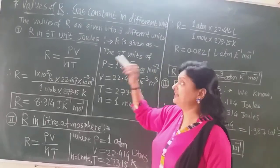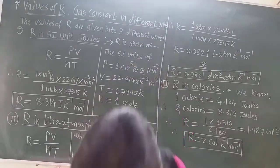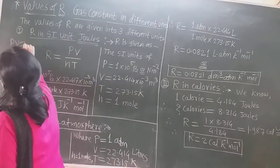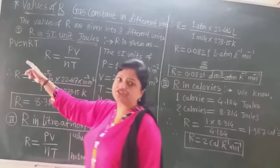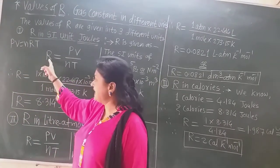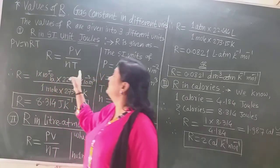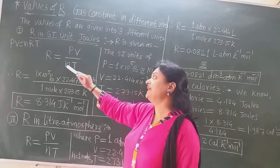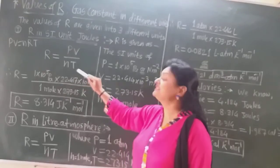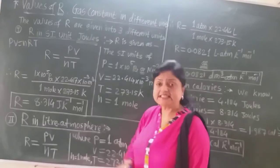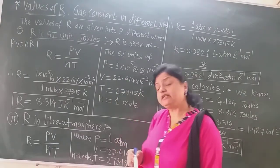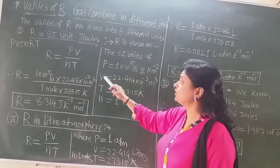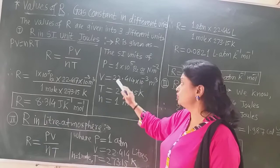We know the ideal gas equation PV = nRT. From this equation, we calculate R as PV divided by nT. In this, P is the pressure, V is the volume, N is the number of moles, and T is the absolute temperature. Let us calculate the value of gas constant R in joules. The SI units of pressure, volume, temperature, and number of moles are given here.